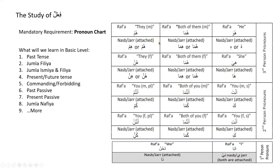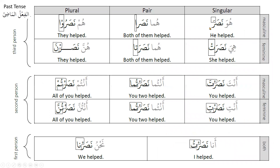The pronoun chart should be at the back of your hand because we are learning fi'l — it is very important that you are all familiar with the pronoun chart. This is our fi'l chart: nasara, nasar-a, nasaruu, hiya nasarat, nasar-ataa, nasar-na, anta nasarta, antumaa nasartumaa. The portion covered with a square tells you that part is changing. All of these are indications of the inside doer based on the pronoun chart of the fi'l maadi — the past tense.